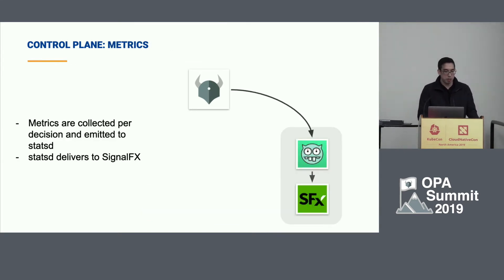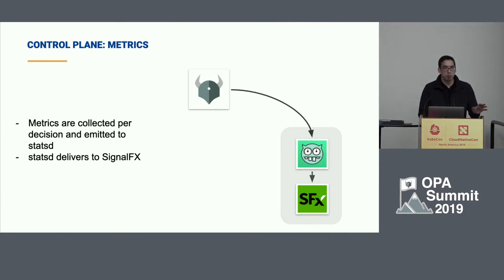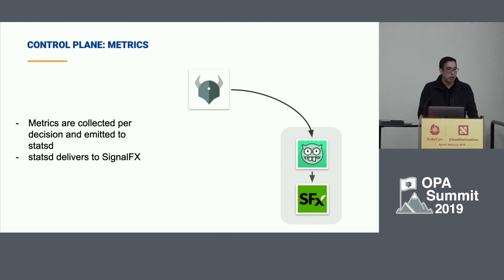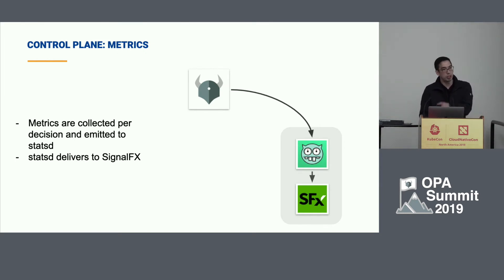The last bit is metrics. OPA works within the Kubernetes ecosystem using Prometheus, but we run StatsD and have our StatsD metrics shipped over to SignalFx. We had to make modifications so we can get those stats out of the OPA agent into StatsD.